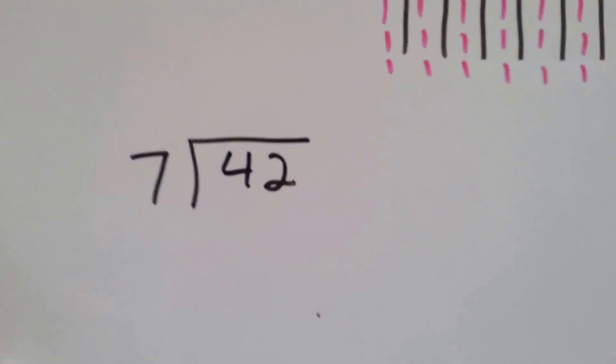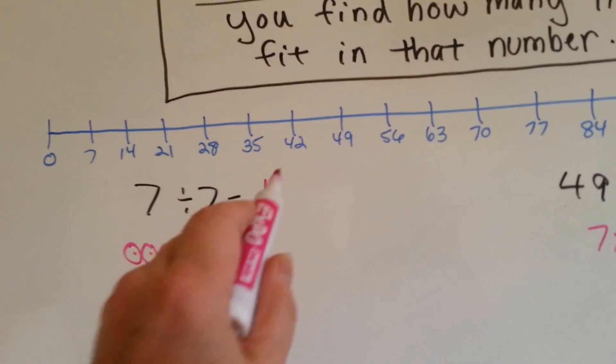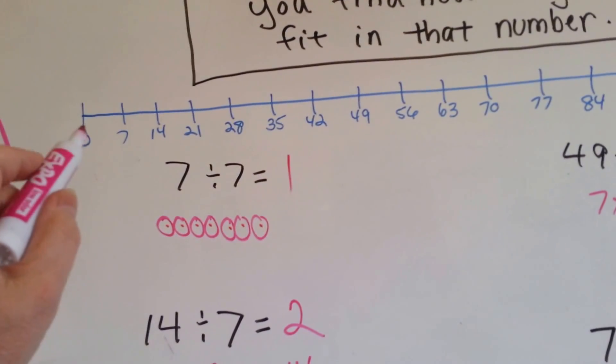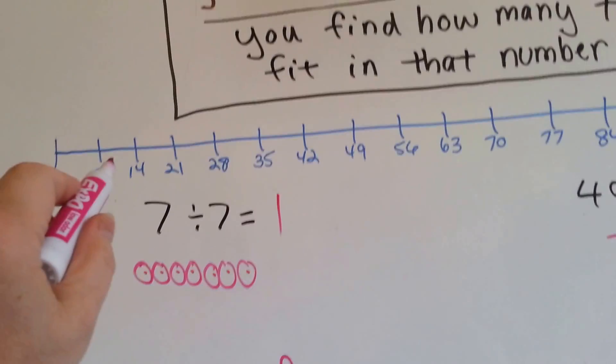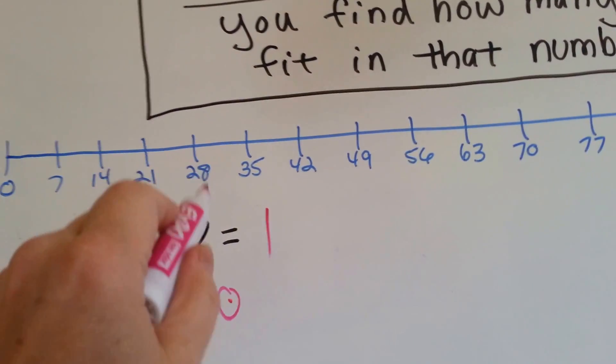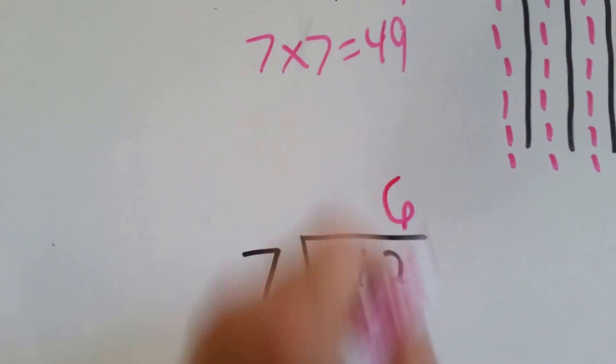Now we have 42. Let's use the number line again. Here's the 42. Let's skip count to see how many times we can skip 7 to get to 42. 1, 2, 3, 4, 5, 6. We're going to put the 6 above here.